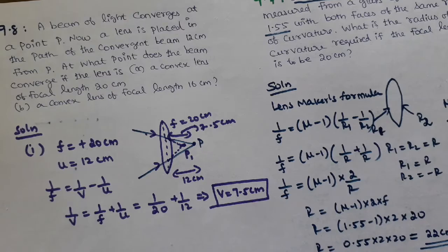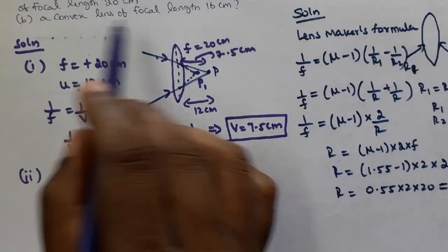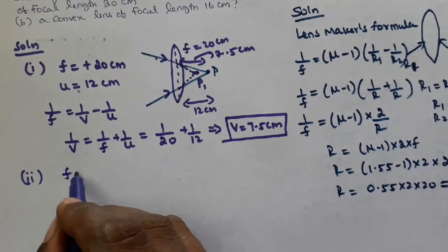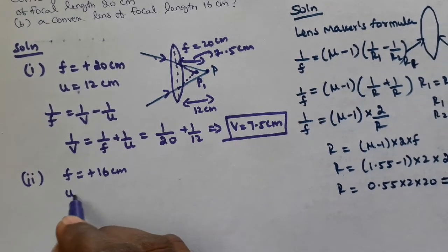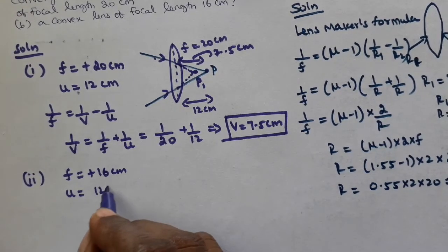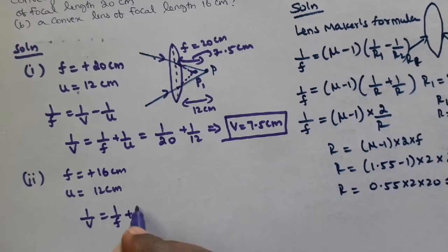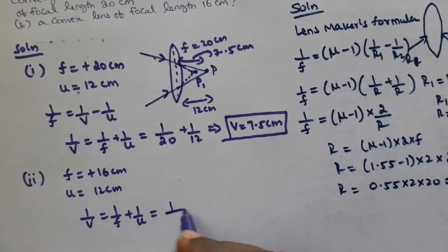Second case: Now with a lens of 16 cm focal length. Object distance is 12 cm. Using the formula 1/V = 1/F + 1/U, so 1/V = 1/16 + 1/12.